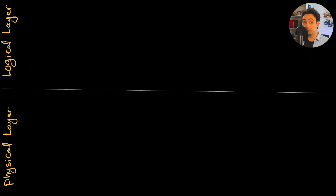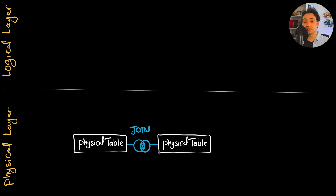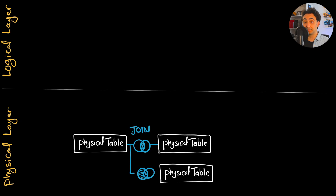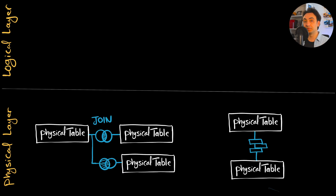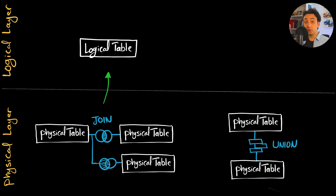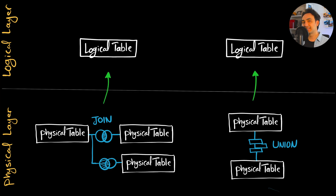In the Tableau data model we have two layers: the physical layer and, on top of it, the logical layer. In the physical layer we might have several physical tables and we can combine them in Tableau using two methods — either joining the tables or using union between them. The logical layer is the top-level layer and provides an abstraction that hides all the details in the physical layer.